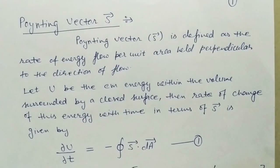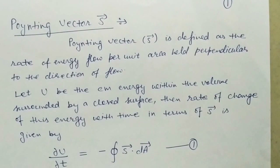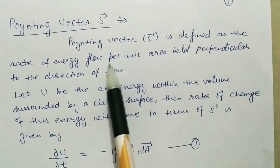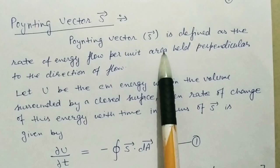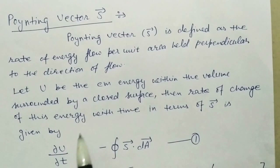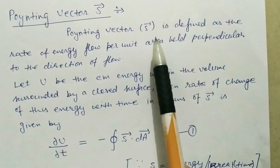Hello students, today we are going to discuss the Poynting vector, which is represented by S. The Poynting vector S is defined as the rate of energy flow per unit time per unit area held perpendicular to the direction of the flow. It means del u by del t per unit area — this is the physical meaning of the Poynting vector.